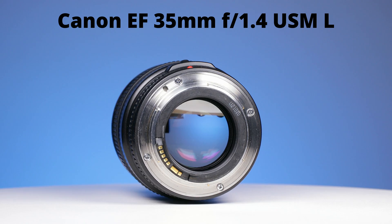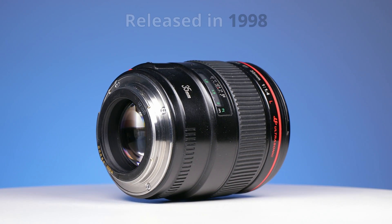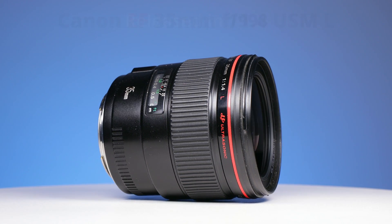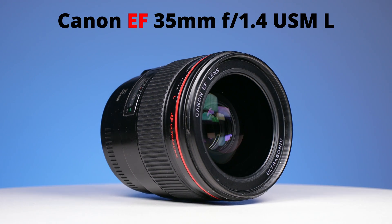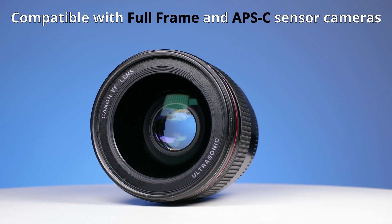The first one is the Canon EF 35mm f1.4 USM L. This is the first version, it was released back in 1998. It has the EF letters in the full name, so of course, it can work on both full frame and APS-C sensor cameras.